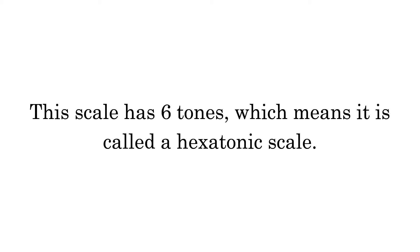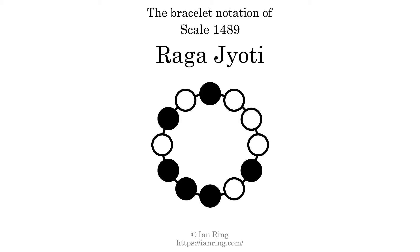This scale has 6 tones, which means it is called a hexatonic scale. This is a bracelet notation diagram of scale 1489. The shaded circles represent tones that appear in the scale, and they are read clockwise, starting at the top.